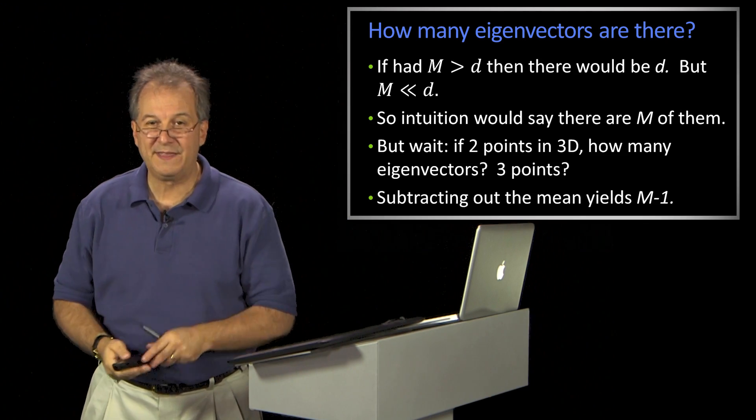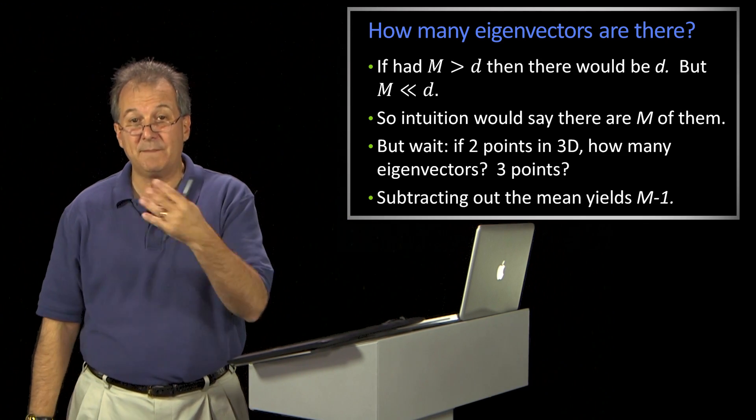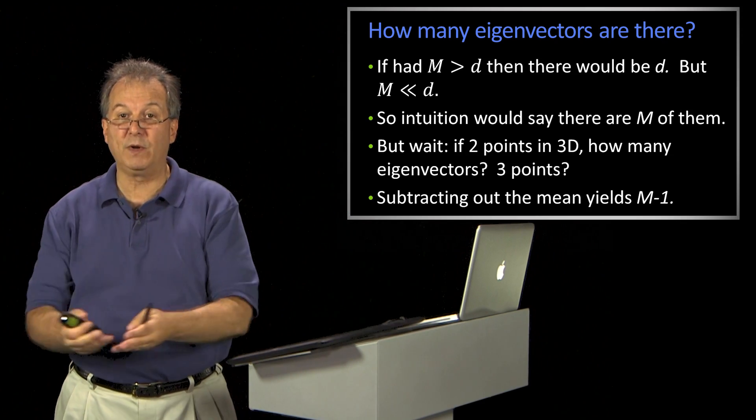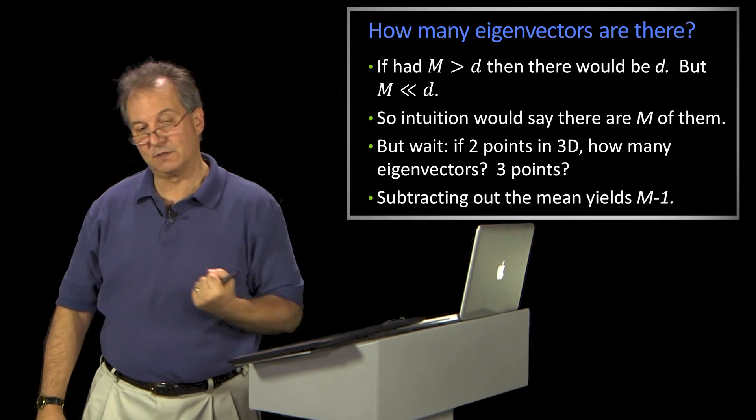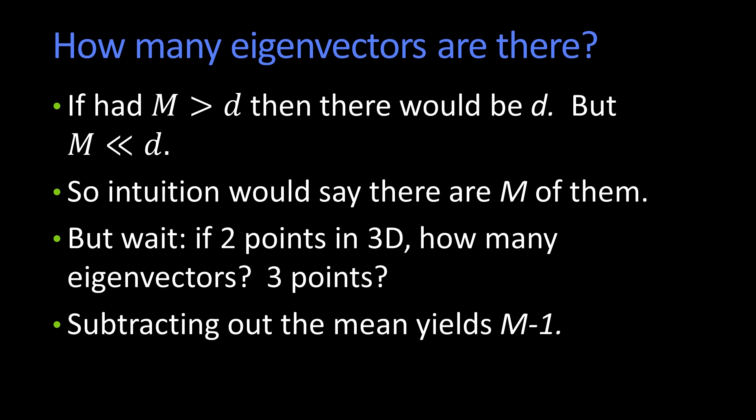In general, there are M minus one eigenvectors. And the reason there's M minus one is, I take my M points, and I subtract out the mean. So that removes a degree of freedom. So that's a trick question that I always give on the final of my course. So if anybody's taking the final, now you know the answer. Okay, there's M minus one.